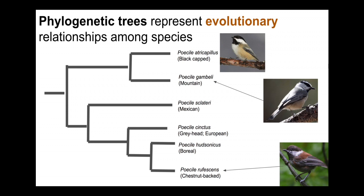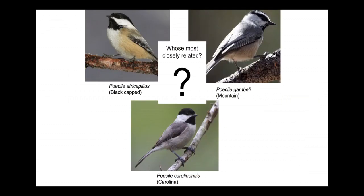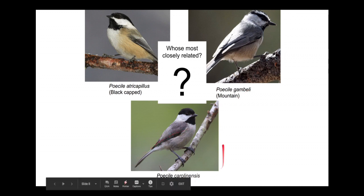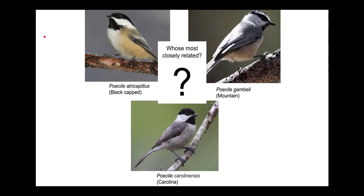Sometimes how similar two species look can help inform this, but it's not always the best way to build phylogenies. Often genetic evidence is the strongest way. For example, three species we can consider are the black-capped chickadee, the mountain chickadee, and the Carolina chickadee. At least to my eye, the black-capped chickadee and the Carolina chickadee look pretty similar to each other, and they both occur in the eastern United States. Their ranges abut each other in Appalachia, just south of Pennsylvania.